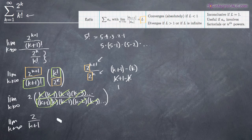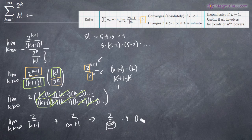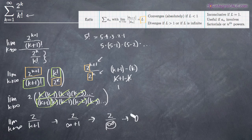Now we just plug in infinity for k. We get 2 over infinity plus 1, which is essentially infinity in the denominator. We know that whenever we have infinity in the denominator, the expression approaches 0. If that concept is unclear, try dividing 2 by 1,000,000 on your calculator — you'll get an extremely small number. So our limit tends toward 0, which means L equals 0.